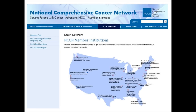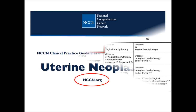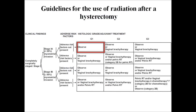The National Comprehensive Cancer Network has incorporated all these guidelines. These can be accessed directly at their website at nccn.org. For instance, a patient with a grade 1 superficially invaded cancer would need only observation. If it was high-grade and had deep muscle invasion, then she might need vaginal radiation, pelvic radiation, or possibly even chemotherapy or a combination.